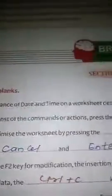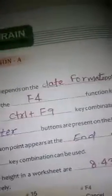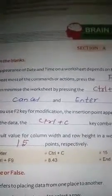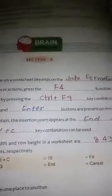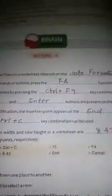Now, the objectives of this chapter: The appearance of date and time on the worksheet depends on the date format applied to the cell. To repeat the most recent command or action, press the F4 key. You can minimize the worksheet by pressing the Ctrl+F9 key combination. The Cancel and Enter buttons are present on the formula bar. When you use the F2 key for modification, the insertion point appears at the end of the cell contents. To copy data, the Ctrl+C key combination is used.